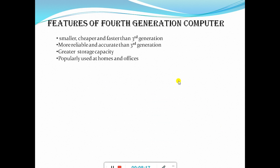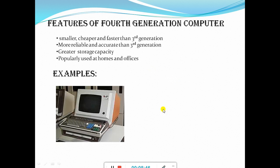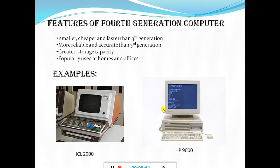Features of the fourth generation computer: smaller, cheaper, and faster than the third generation; more reliable and accurate; greater storage capacity; and popularly used at homes and offices. The fourth generation computers use the powerful microprocessor, mainly used in desktops, which are used in homes and offices today. Examples: ICL 2900 and HP 9000.